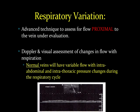Respiratory variation is not used very often. It is an advanced technique which will tell you whether there's a clot proximal to the vein under evaluation. So if there's a clot in the iliac vein or the inferior vena cava, you wouldn't expect to see respiratory variation of flow with changes in intrathoracic pressure in the veins more distal to that clot. Again, this is not used that often.